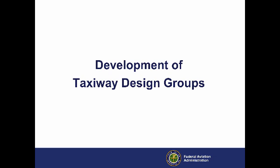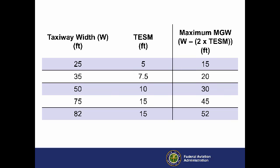The goal of the TDG is to strike a balance between standardization and cost control. In this video, we'll explain how we developed the TDGs. To avoid changes in the width of existing taxiways, we first determined the Maximum Main Gear Width, or MGW, we can recommend for each current standard straight-section taxiway width. We calculated this MGW by subtracting the Taxiway Edge Safety Margin, or TESM, from each side of the taxiway width, as shown in this table.